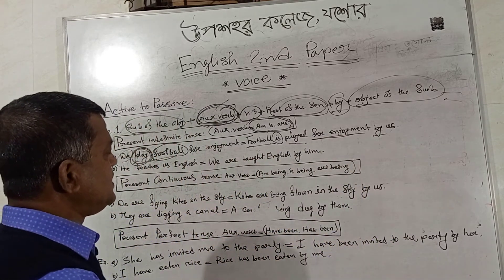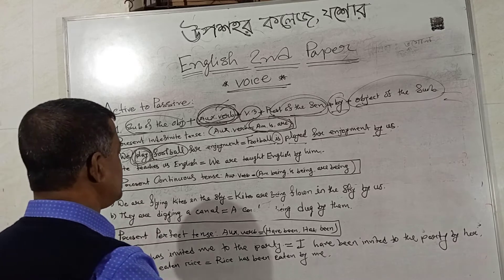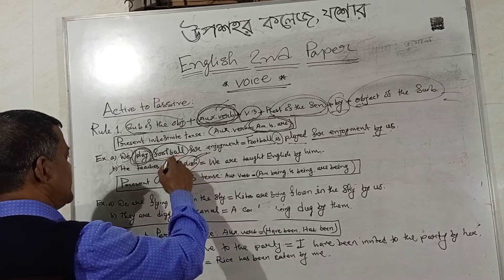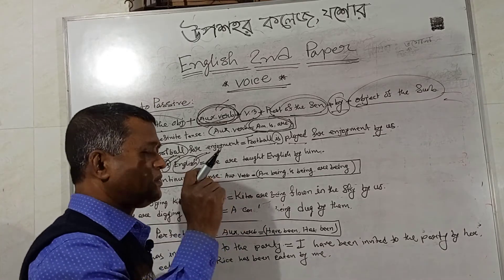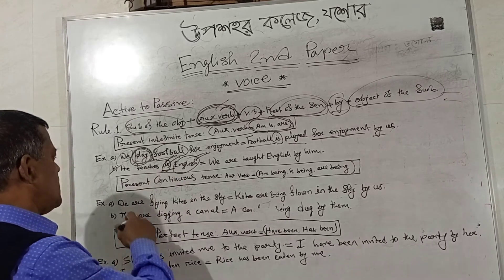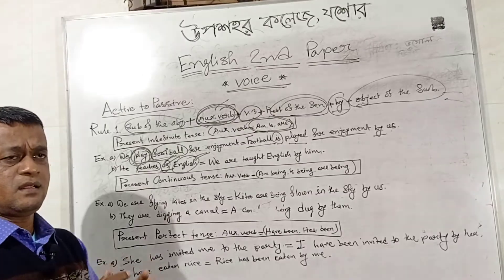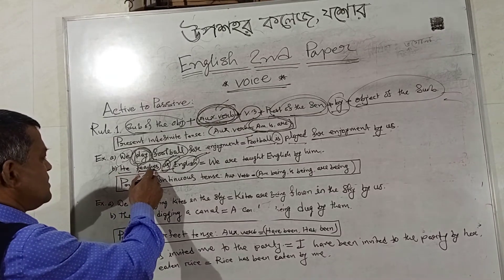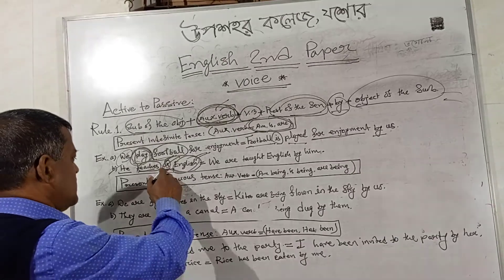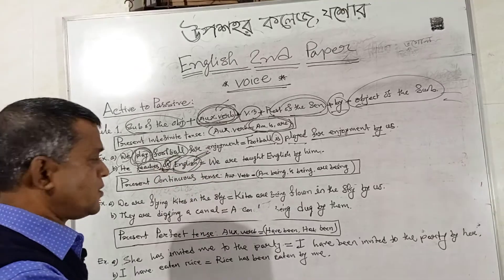The answer will be: 'Football is played for enjoyment by us.' The second example: 'He teaches us English.' Notice here we have got two objects — 'us' and 'English'. 'Us' is the indirect object and 'English' is the direct object. You should keep in mind that the object is normally always after the verb. You will find: subject, then verb, then object, then rest of the sentence.